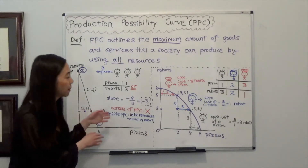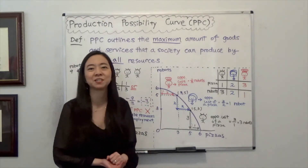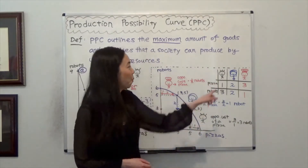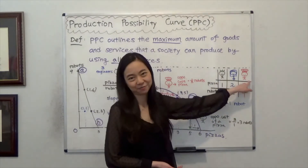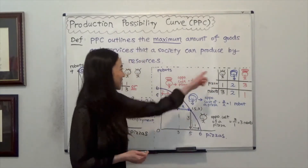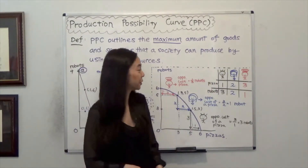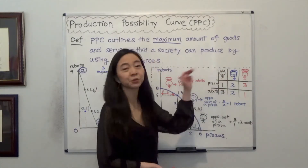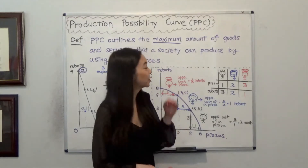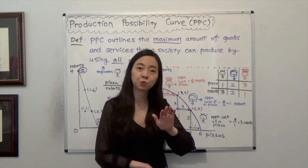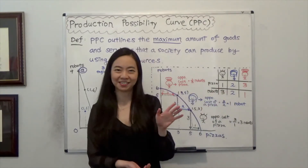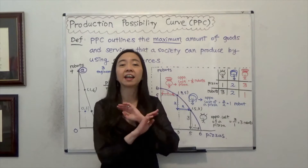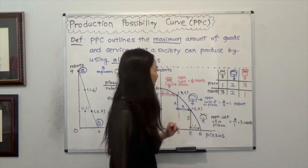Now let's talk about when we see a bow-shaped Production Possibility Curve. Suppose instead of 3 engineers, we have 1 engineer, 1 economics professor, and 1 chef. The engineer can produce either 1 pizza or 3 robots per hour. The economics professor — who is also a mom, knows how to cook and knows math — can produce either 2 pizzas or 2 robots per hour. The chef, who is good at cooking, can produce either 3 pizzas or 1 robot per hour.